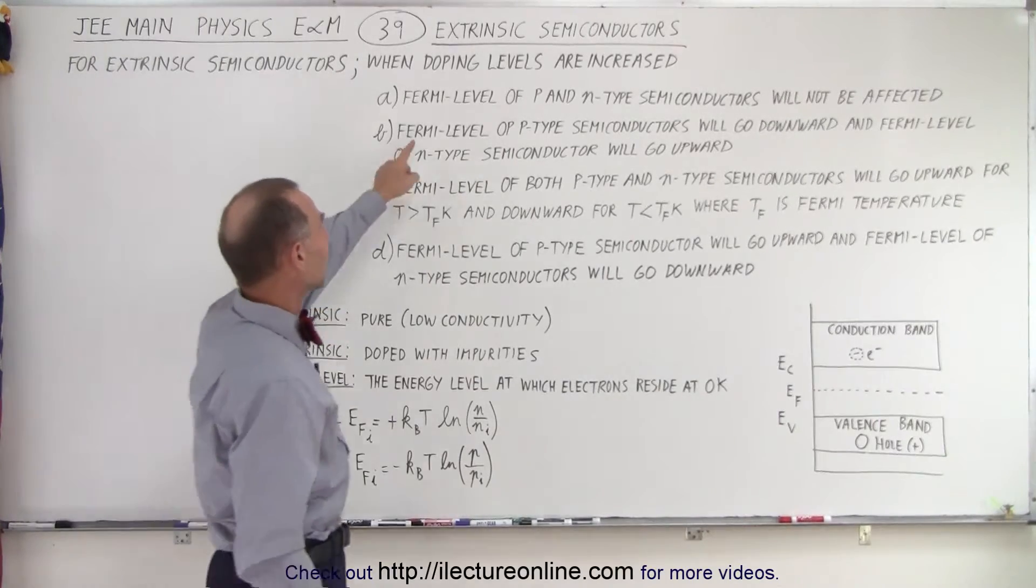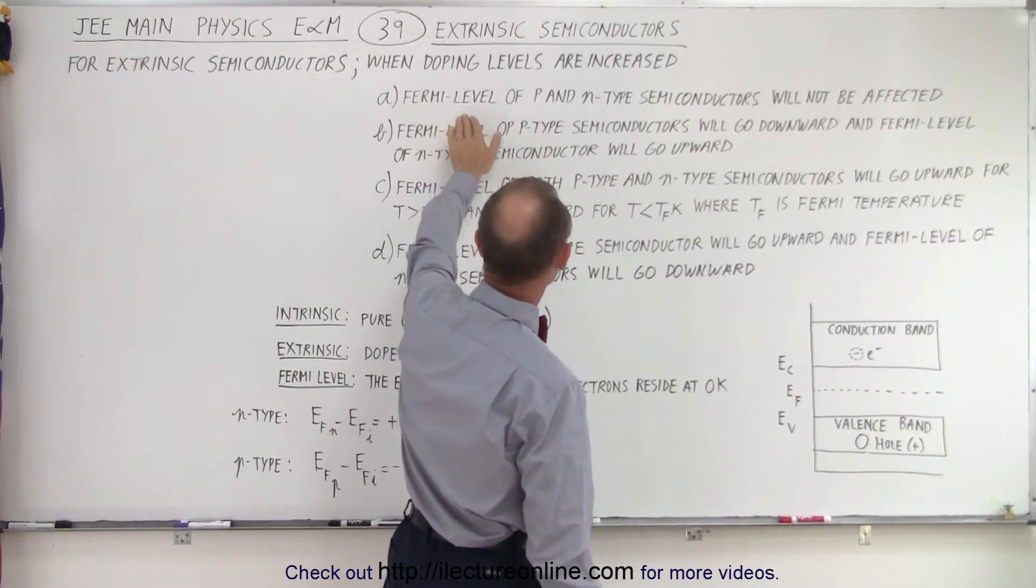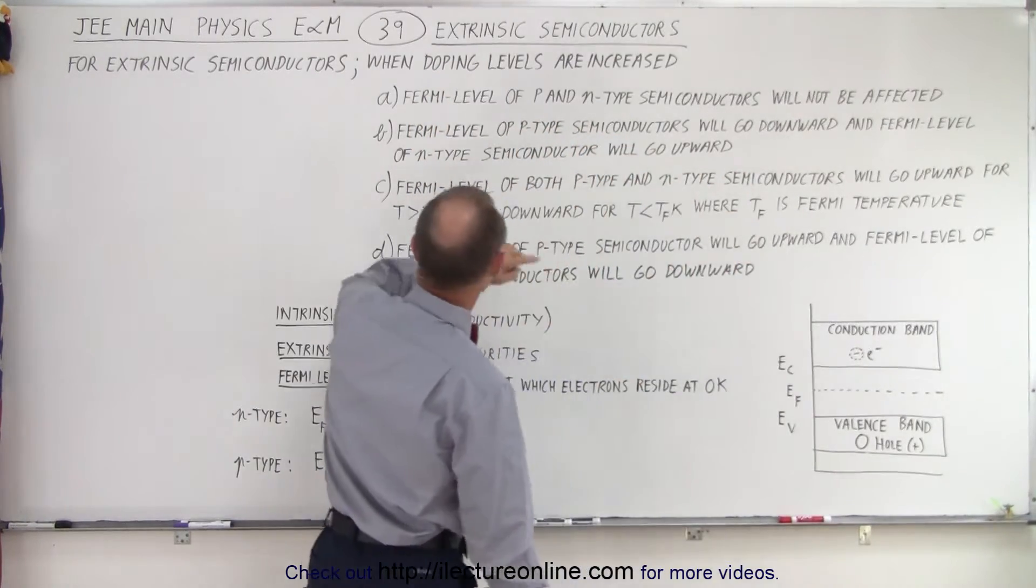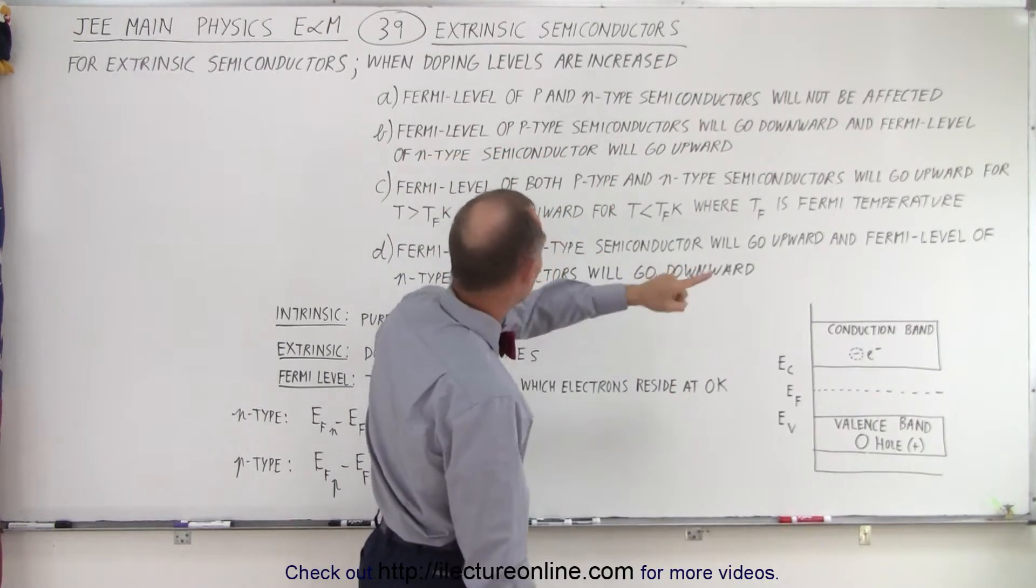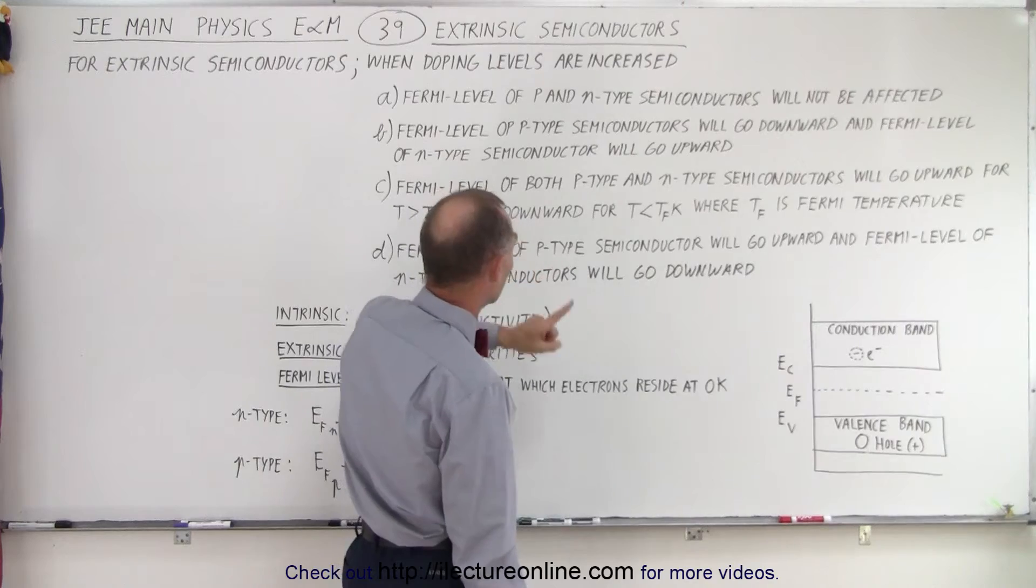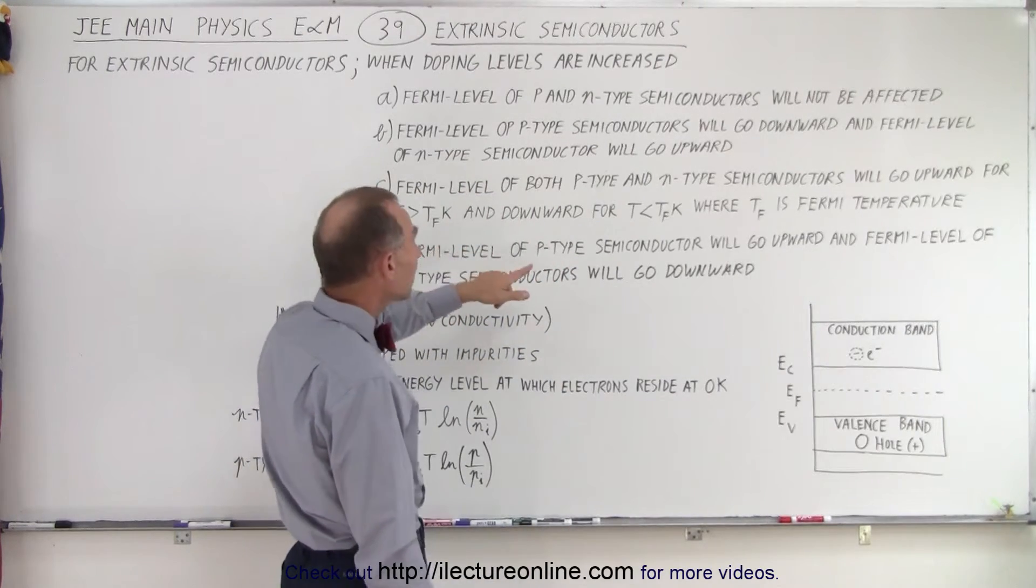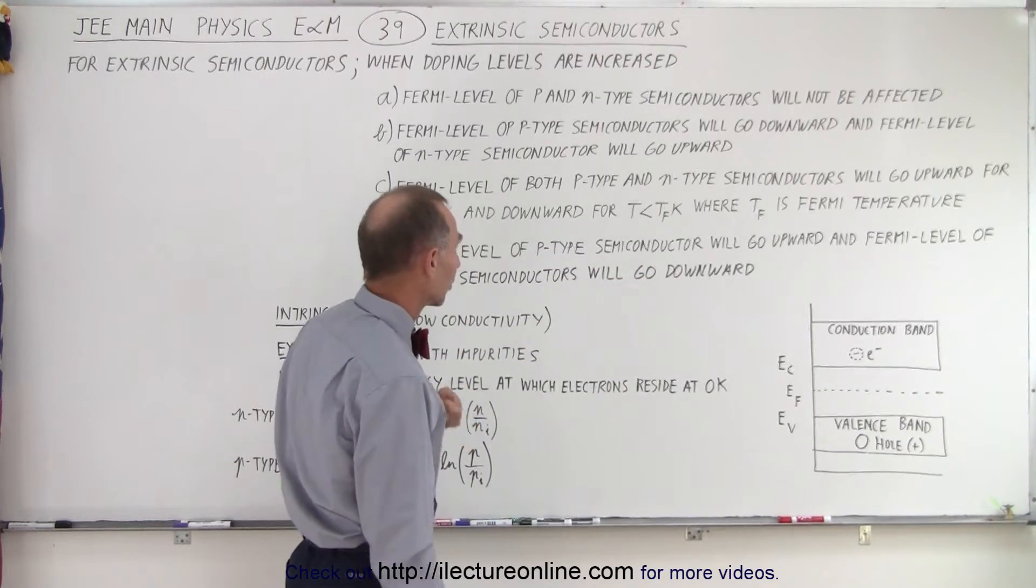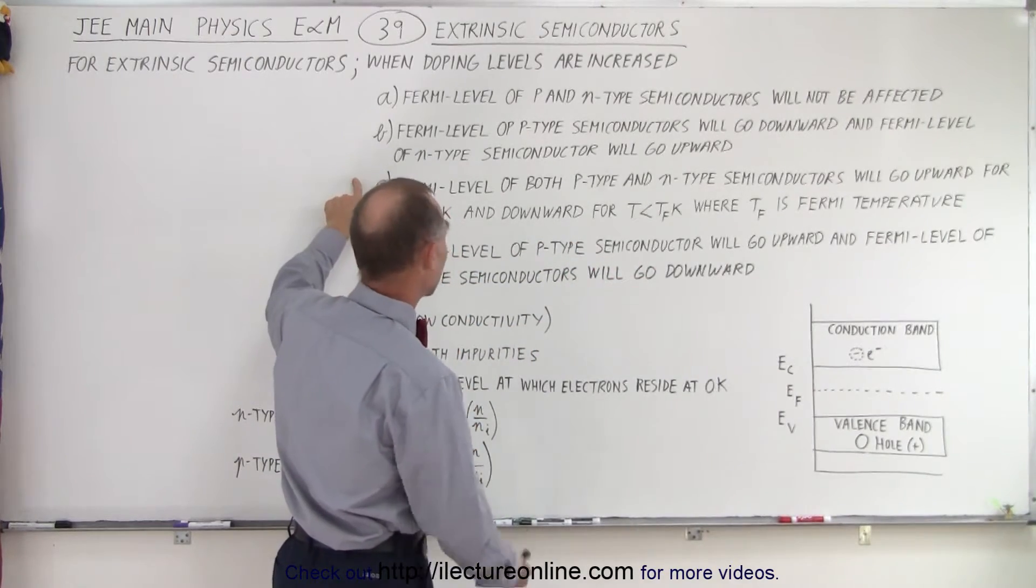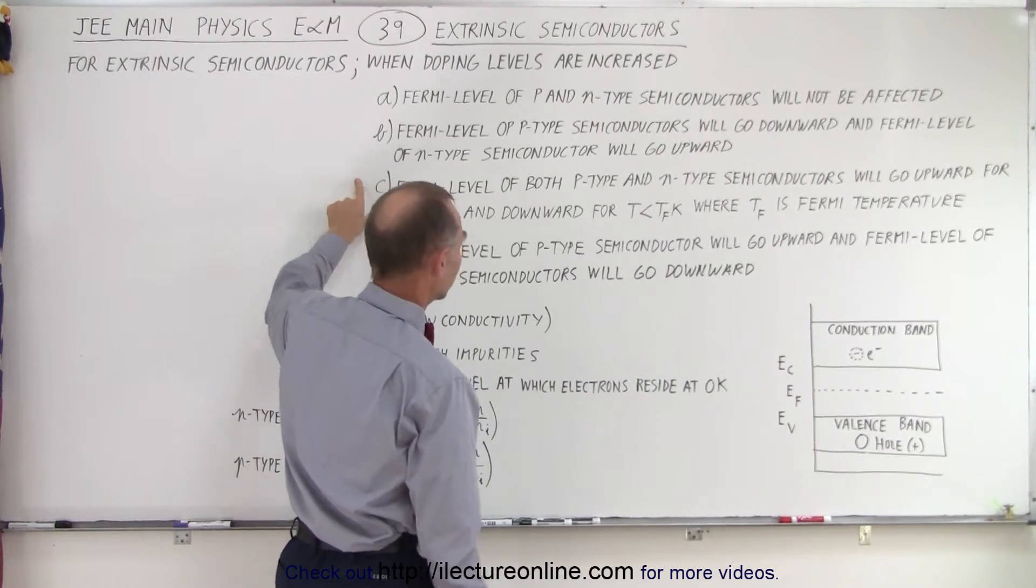So for Fermi level of P and N type semiconductors, the Fermi level of P and N type semiconductors will not be affected. The Fermi level of P type semiconductors will go downward and Fermi level of N type semiconductors will go upward. And here they claim it depends on the temperature, where T_F is the Fermi temperature.